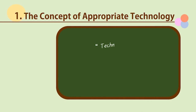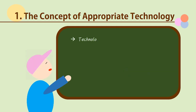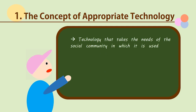First of all, what is Appropriate Technology? Let's look at the terms on the board: Technology with a Human Face, Alternate Technology, Indigenous Technology — these are all different terms for Appropriate Technology. So, what is Appropriate Technology? It is technology that takes the conditions and needs of the social community in which it is used into consideration.